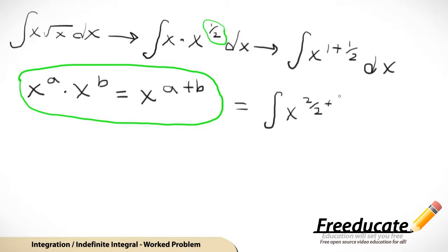So we have x to the 1 half, or x to the 2 halves plus 1 half dx. So, of course that's all going to equal the integral of x to the 3 halves dx. And from this point we can just integrate this thing directly.